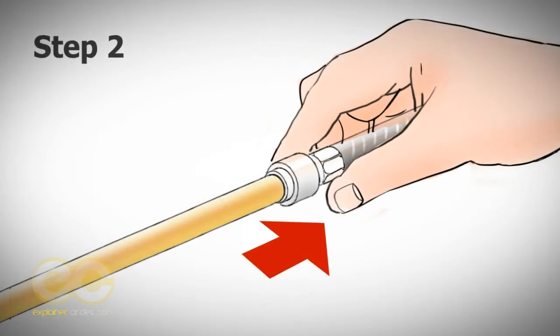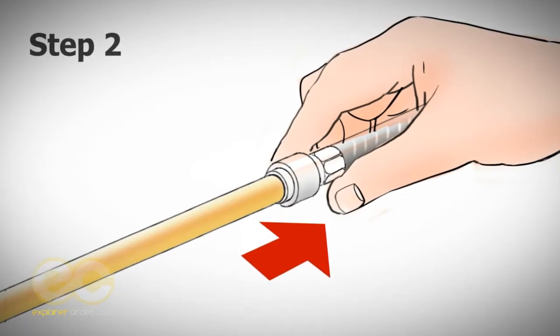Step 2: Insert pipe and push fully home ensuring it goes past the initial resistance of the collet and O-ring.